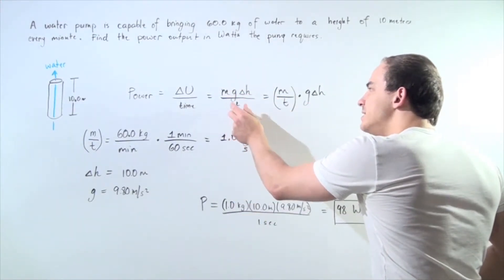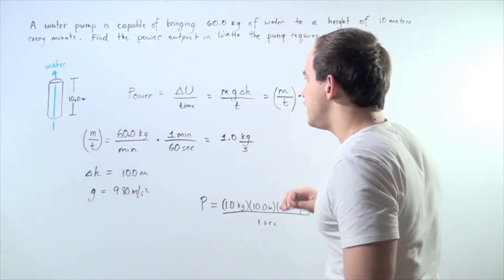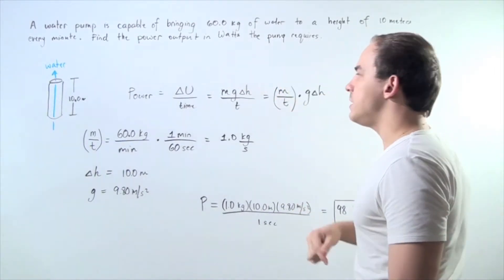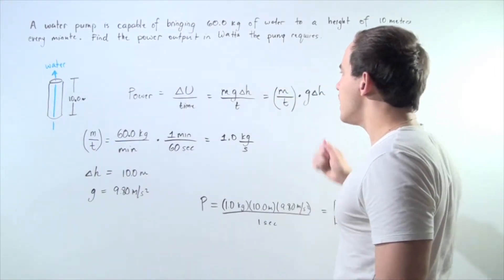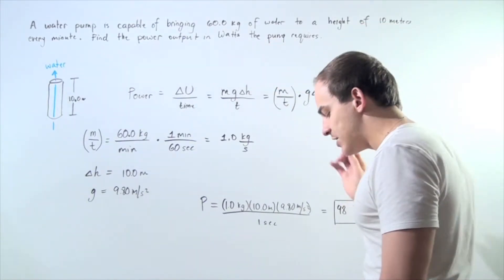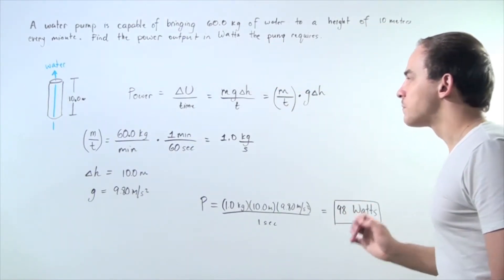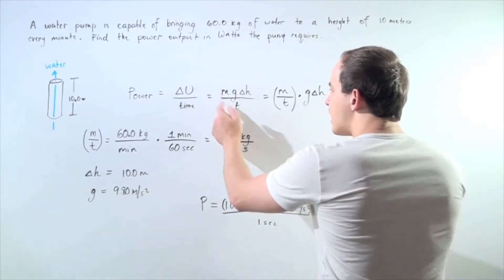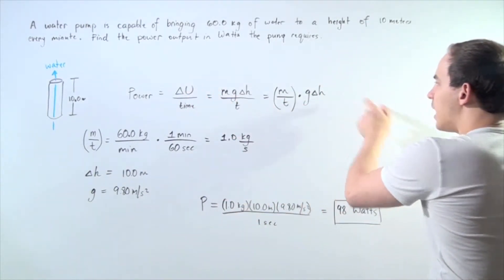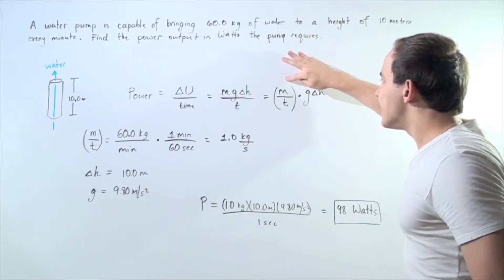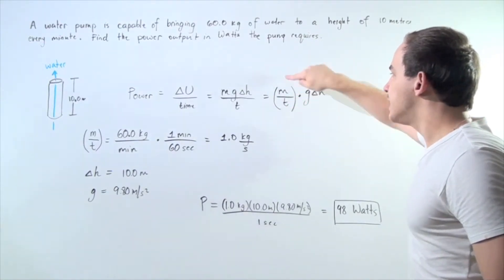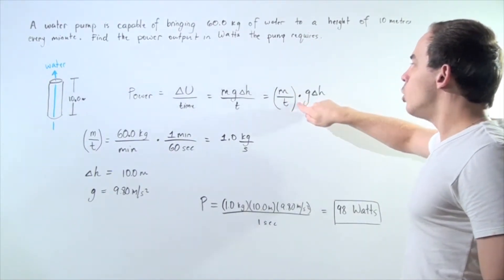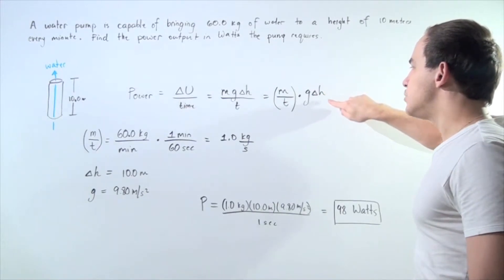Now, the time should be in seconds. The mass should be in kilograms. The g should be in meters per second squared. And the h, or change in h, should be in meters. Notice we can couple the mass and the time together to give us the following equation: the mass divided by the time in kilograms per second multiplied by g times change in h.